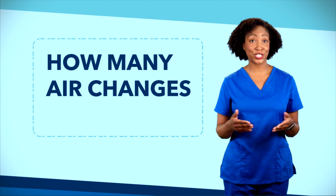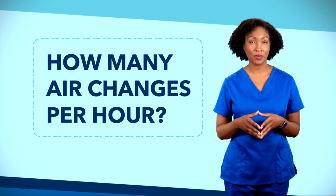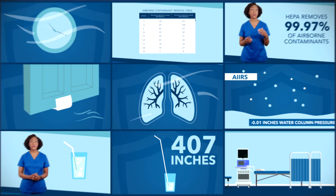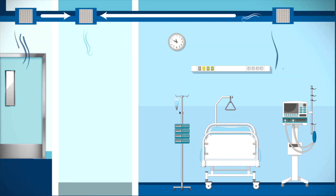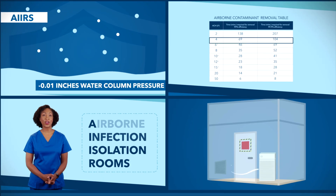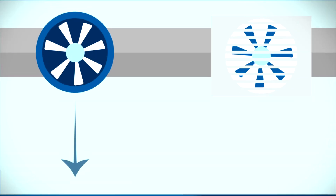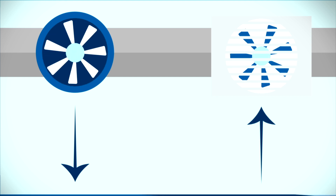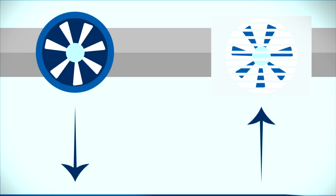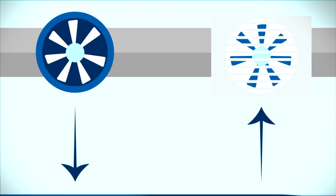So how many air changes per hour are used for each patient's room? This free series explains how ventilation works in hospitals and how ventilation decisions can impact infection control. We use supply fans to blow air into a room and exhaust fans to suck the air out of a room. Whichever fan is doing more work determines if the room is positive or negative pressure.